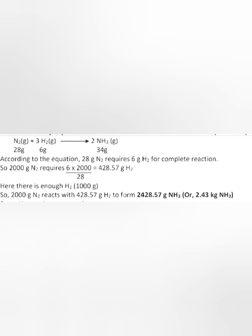According to the equation, 28 grams of N2 requires 6 grams of H2 for complete reaction. So 2000 grams of N2 requires 6 times 2000 divided by 28 equals 428.57 grams H2. Here there is enough H2, so 2000 grams of N2 reacts with 428.57 grams H2 to form 2428.57 grams NH3.